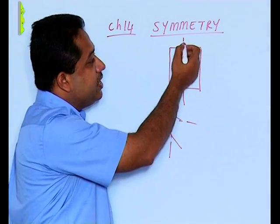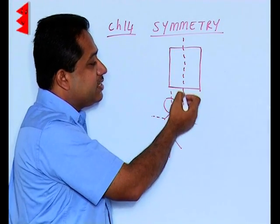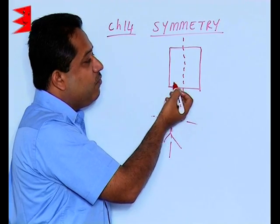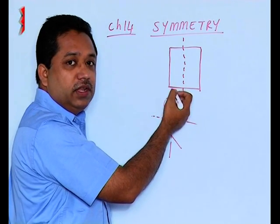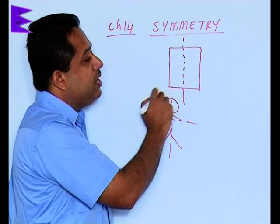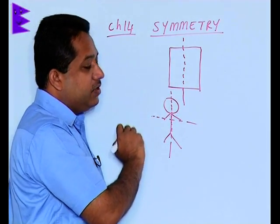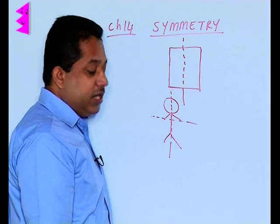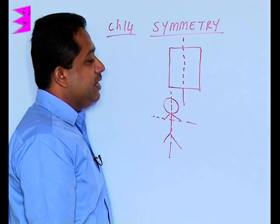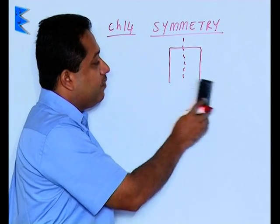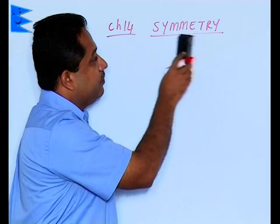As mentioned, this is called the axis of symmetry. A figure may have one axis of symmetry, two, three, four, or many axes of symmetry. Let us try to understand the symmetry concept with the help of some figures.